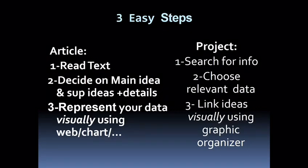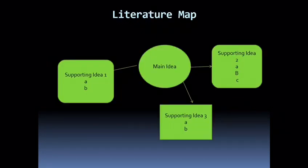If you look at this web, this is also called a literature map, which means you are going to map your ideas, showing the links between ideas and supporting ideas and details. We have basically supporting idea 1, AB or ABC, etc. What are you going to do with this web?